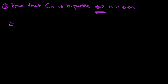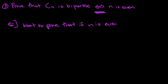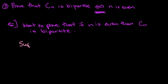Let's write this down because we're proving this portion of the statement. We want to prove that if n is even, then the cycle on n vertices is bipartite. Let's go ahead and prove that portion and then later we'll look at the other portion. Suppose n is even.